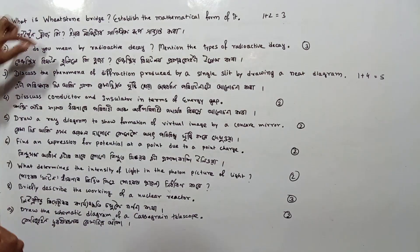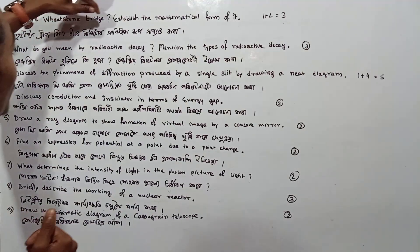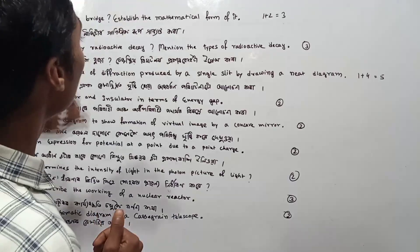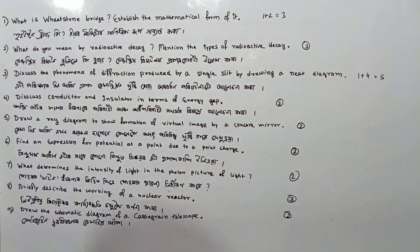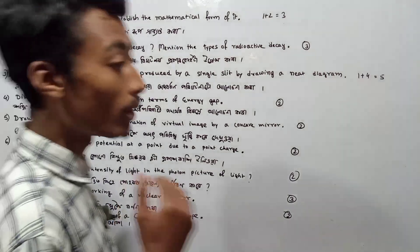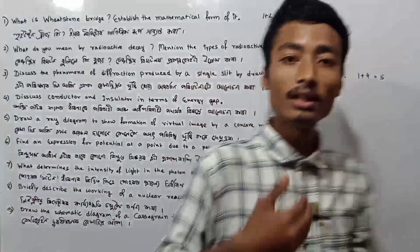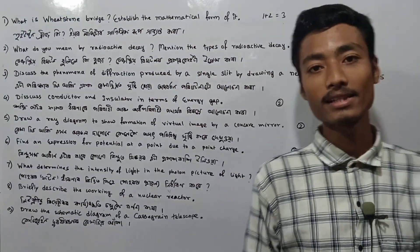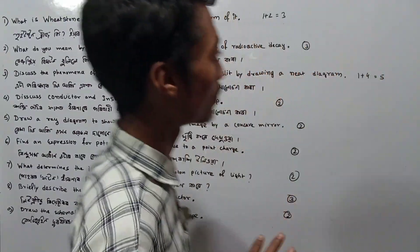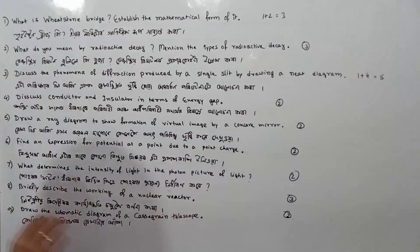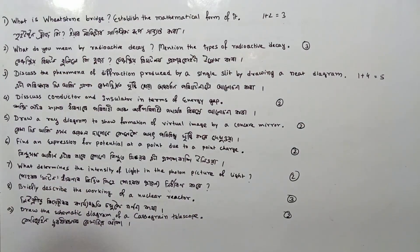Wheatstone bridge — what is it, and establish its mathematical form. This will carry 1 plus 2, that is 3 marks. This is a 3-mark number question.